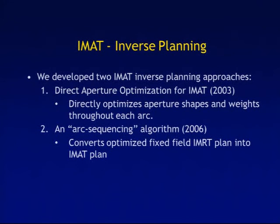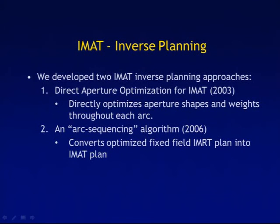At the University of Maryland, we developed two different approaches to IMAT inverse planning. One was called direct aperture optimization, which directly optimizes the aperture shapes and weights throughout each arc — and this kind of approach is what's in pretty much most of the commercial VMAT solutions today. We also developed an arc sequencing algorithm using the more traditional IMRT inverse planning approach: optimizing fluence maps for each beam direction, then using a sequencing algorithm to convert the fluence maps into deliverable arcs, similar to the approach used in the Monaco planning system.